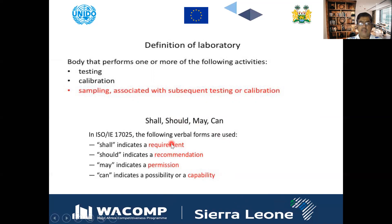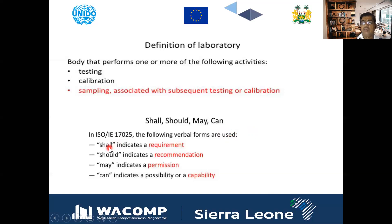In ISO 17025 there are some rules in the standard. I would recommend that everybody must have a copy of the standard. If you read the standard in some clauses and sub-clauses, you will find 'shall' — wherever 'shall' is used it indicates a requirement. Wherever 'should' is used it indicates a recommendation. Wherever 'may' is used it indicates permission. Similarly, 'can' indicates possibility or capability. These are the four types of different words used in the standard.